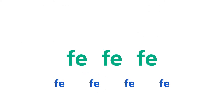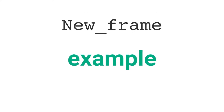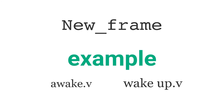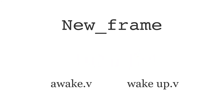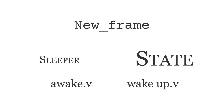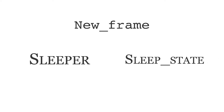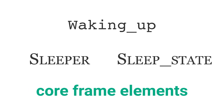Frame elements can have different statuses in a frame. Some of them are mandatory for the frame to be present, while some contribute circumstantial information to the frame. For example, if you want to create a frame representing the background scene against which the meaning of English verbs such as awake and wake up is to be defined, such a scene would necessarily involve a main character — the sleeper — and the state they were in at the time the event occurred, called the sleep state. Those two, the sleeper and the sleep state, are the core frame elements in the waking up frame.